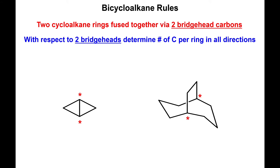From the point of view of the bridge heads — and this is why it's important to determine where these bridge heads are — we have to determine how many carbons there are per ring: to the left, to the right, and potentially to the top of where the bridge heads are, without counting the bridge heads themselves within the count.